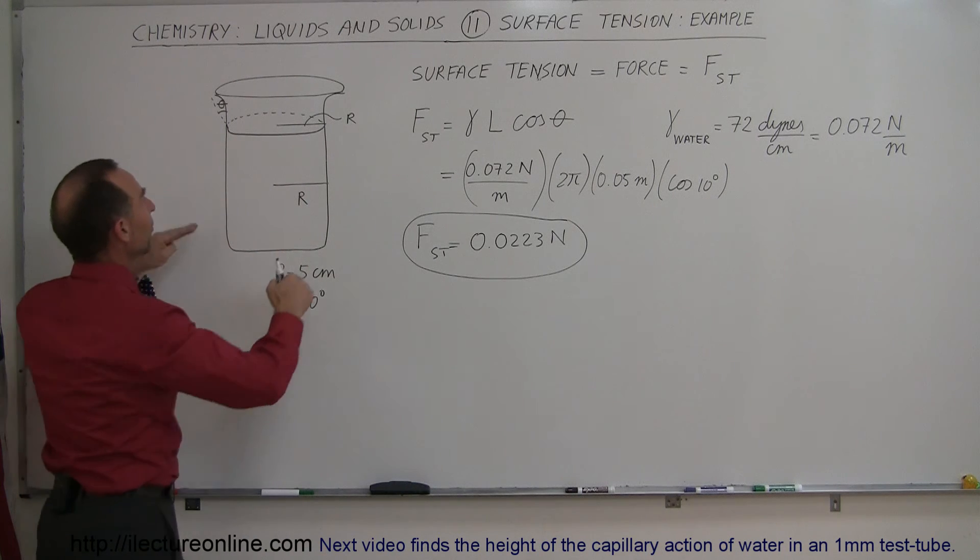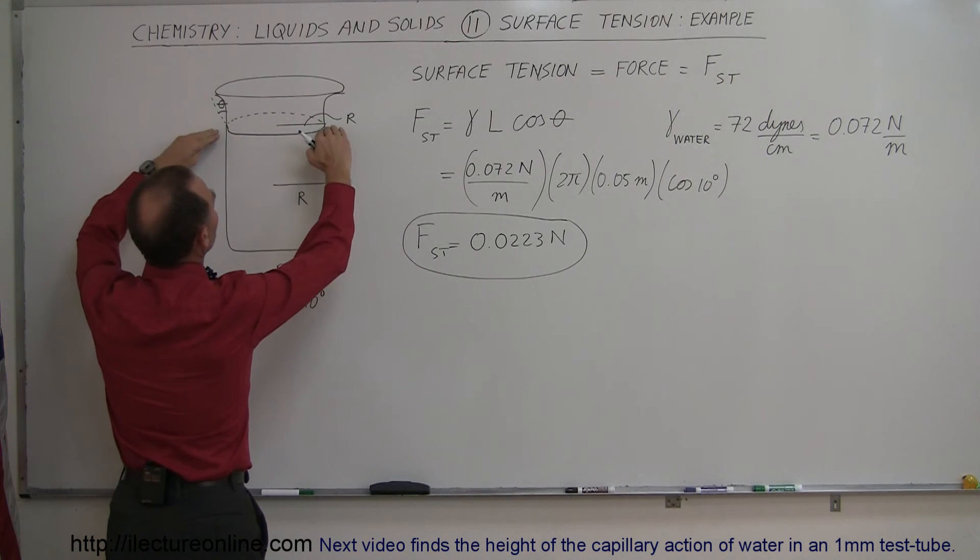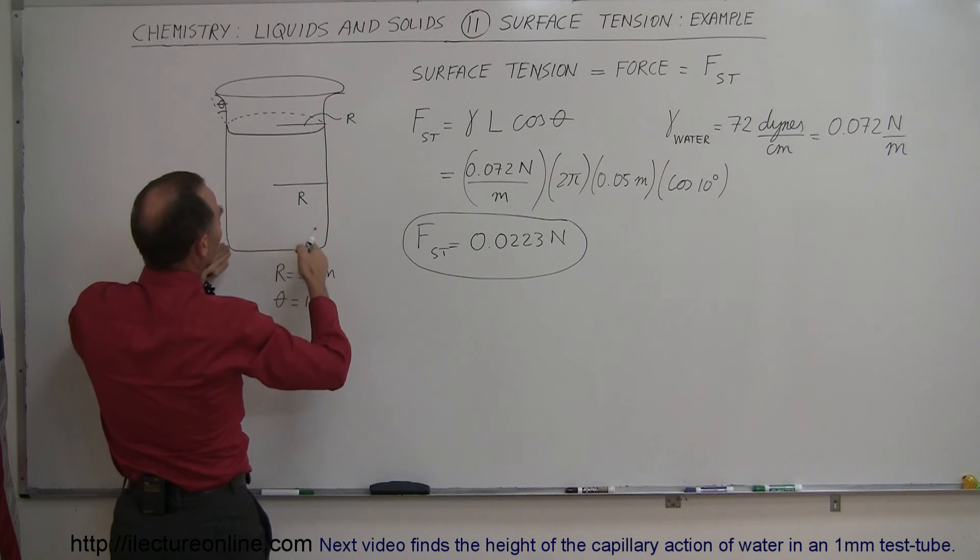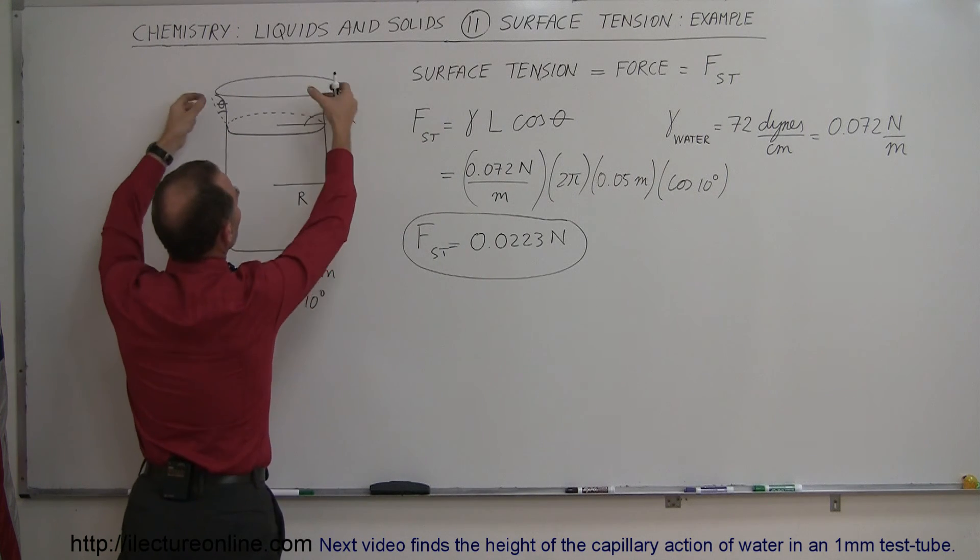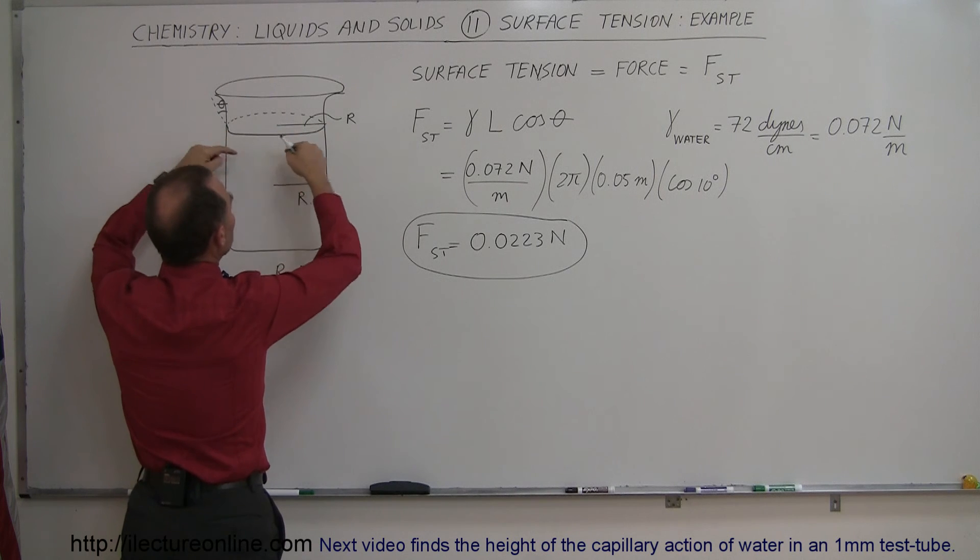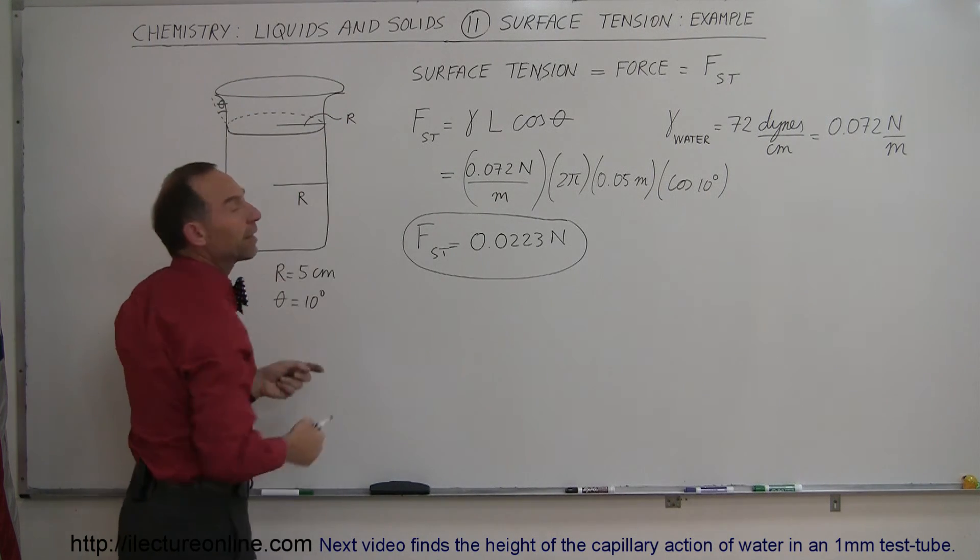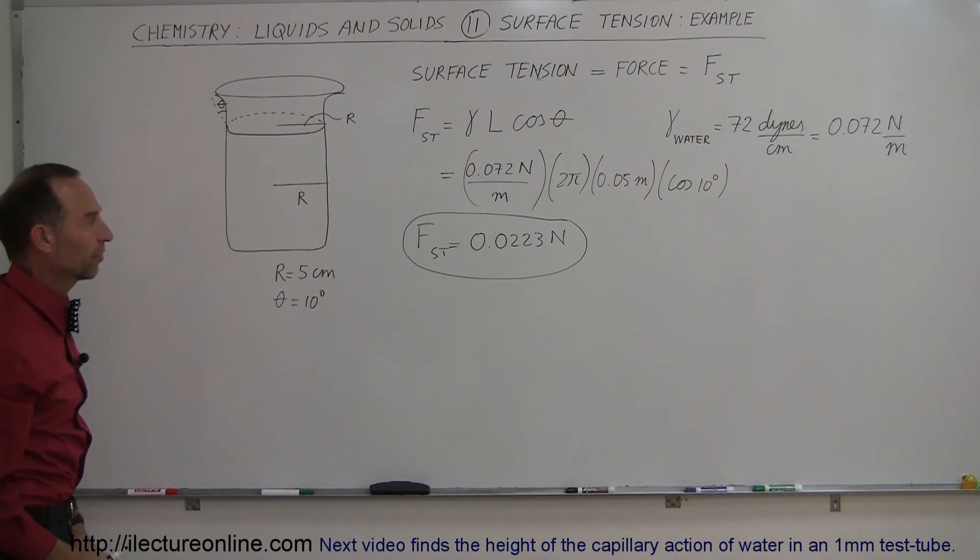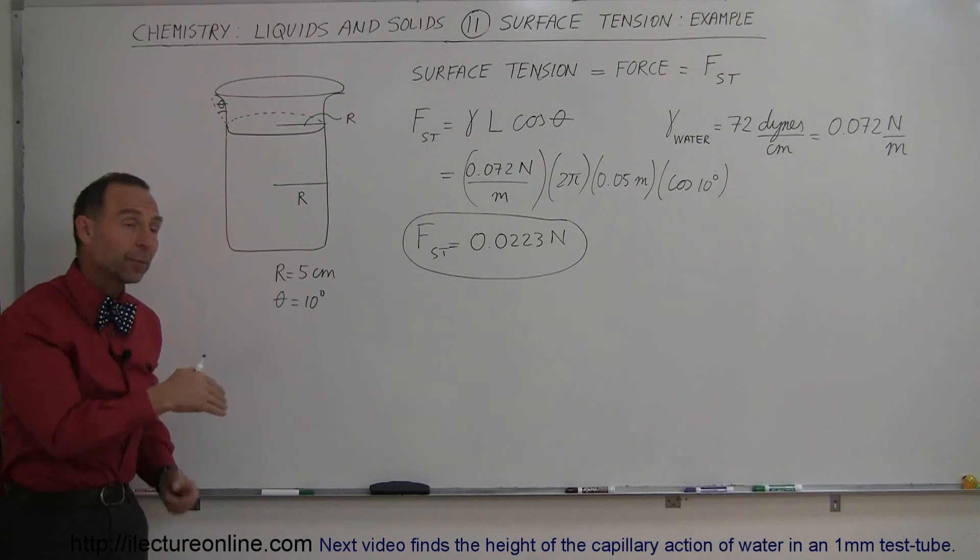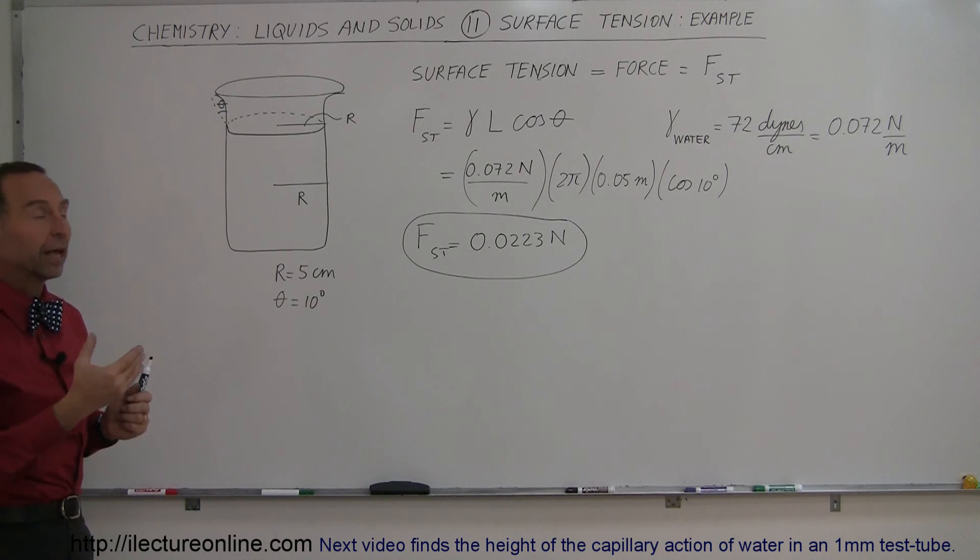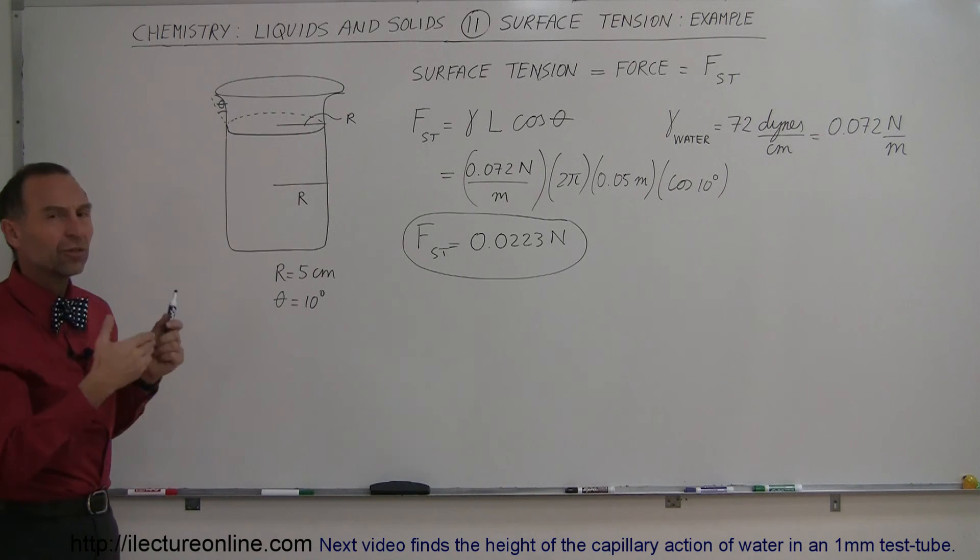And so you can almost imagine that let's say we had a hollow beaker right here, and this was a big cup of water, and we stuck the hollow beaker in the surface. We would be shearing off a section of the water along the rim of the beaker, and that's kind of the way you want to think about surface tension. And then in the next example, we're going to show you the capillary action as a result of the surface tension, which is kind of like that.